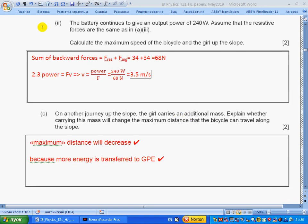Part ii: The battery continues to give an output of 240 watts. Assume that the resistive forces are the same as in part a-iii. Calculate the maximum speed of the bicycle and the girl up the slope. The sum of backward forces is the resistive force and component of the weight: 34 and 34 gives us 68 newtons. Again, we assume that the girl is moving at constant speed, and the forward force equals also 68 newtons. This force is doing work due to the battery. From section 2.3: power equals force times speed, so speed equals power by force, and we get less speed.